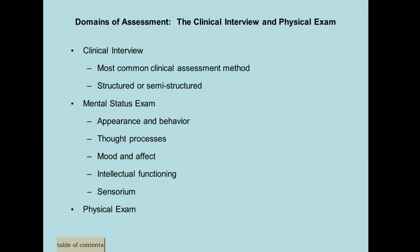Their intellectual function you'll mostly gather from just doing the evaluation — from talking about academic history and asking specific questions that point to their intellectual abilities. Sensorium refers to whether they are alert and oriented to person, place, and time. Person means they know who they are; place means they know where they are; and time means they know the date or the year. Then there's the physical exam — you're not going to be doing physical exams yourself, but if they haven't had one, you want to refer them to their physician to get that done.